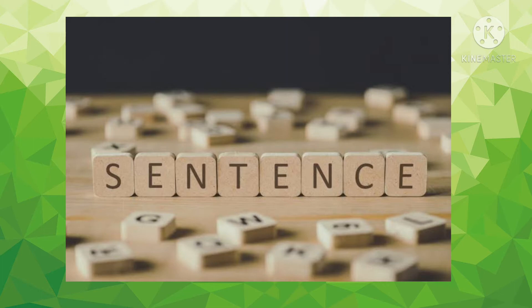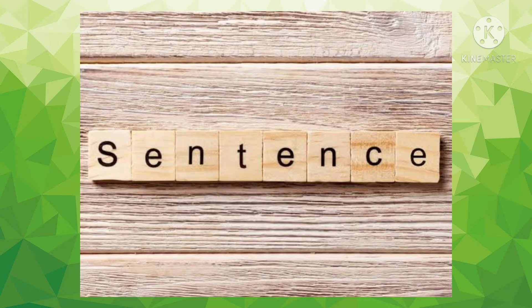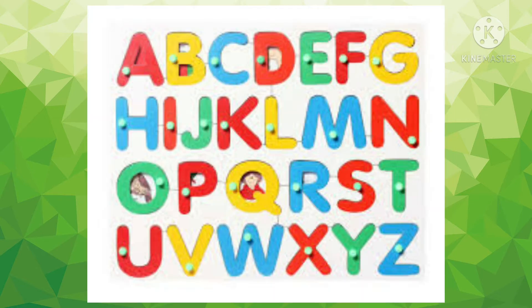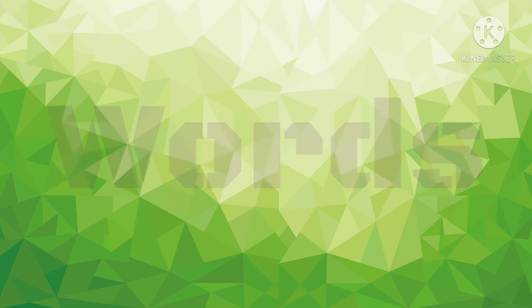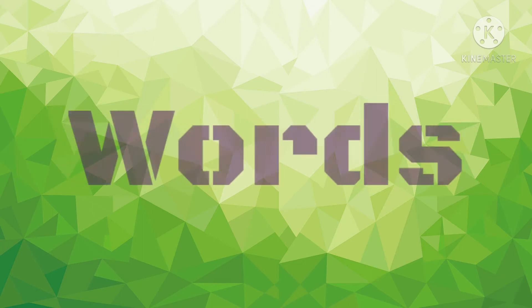A sentence is a group of words that conveys complete sense. For this you should know and revise what are letters in English. English has 26 letters, that is A, B, C, D, E up till Z, and when these letters join together they form a word, and when we write few words together it becomes a sentence.